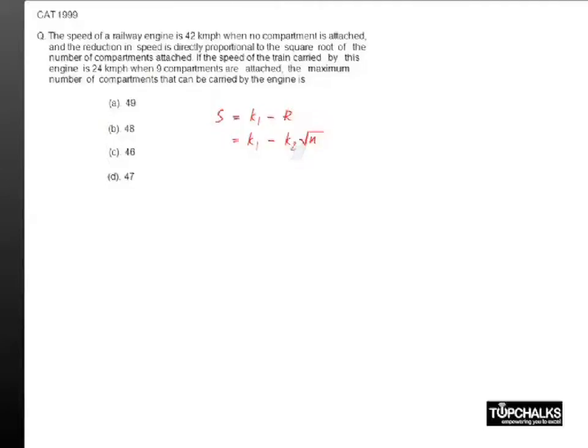The first data we know is when there are no compartments attached, the speed of the train is 42, which implies k1 must be equal to 42. So I can